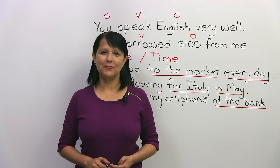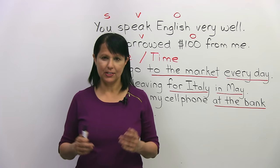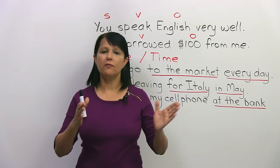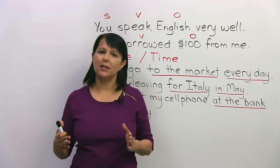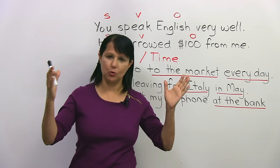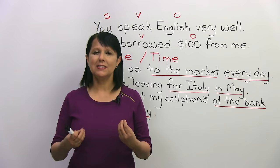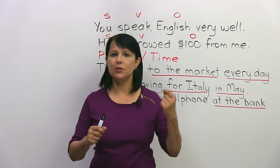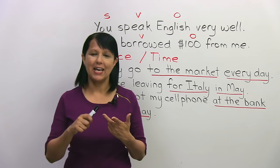Hi, I'm Rebecca from EngVid. In this lesson, you'll learn how to talk about place and time correctly in an English sentence. This is important because in every language, the order of words in a sentence varies. It's different. And in English, we have certain patterns that we follow. I'm not talking about English poetry or fancy English prose — I'm talking about regular English sentences, conversational English, business English, and so on. Let's get started.